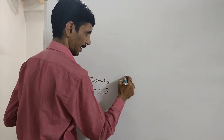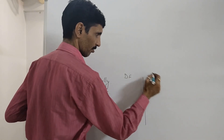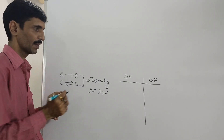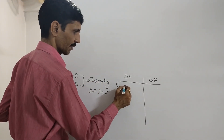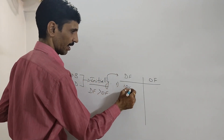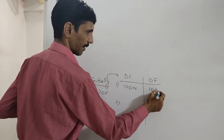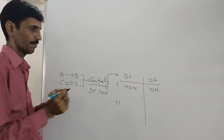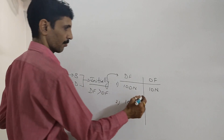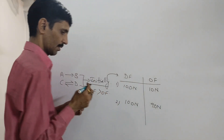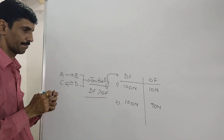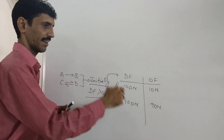Let us take an example. I have a driving force and an opposing force. Force is generally expressed in terms of Newtons. We are looking at two cases with initial conditions. In the first case, driving force is 100 Newtons and opposing force is 10 Newtons. In the second case, driving force is 100 Newtons and opposing force is 90 Newtons. In both cases, the driving force is greater, so reaction proceeds in the forward direction.